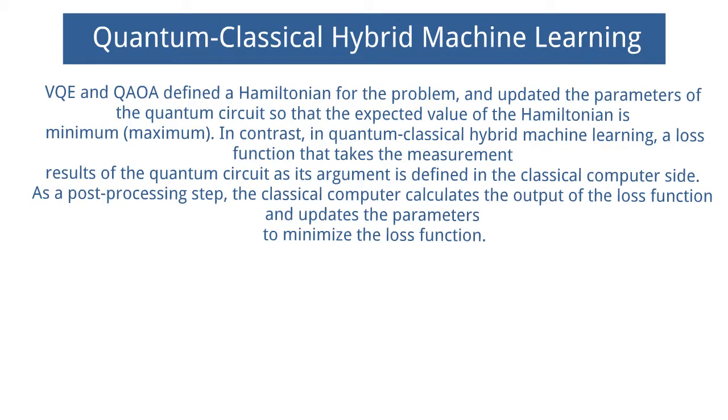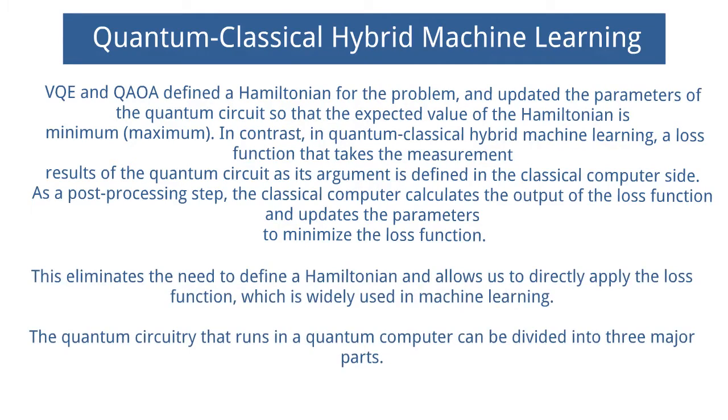As a post-processing step, the classical computer calculates the output of the loss function and updates the parameters to minimize the loss function. This eliminates the need to define a Hamiltonian and allows us to directly apply the loss function, which is widely used in machine learning.